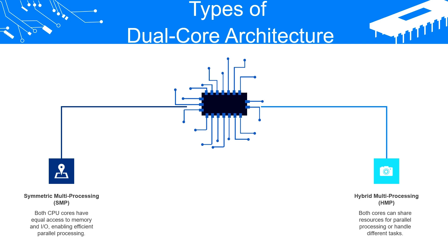Starting with Symmetric Multiprocessing (SMP): SMP is a type of dual core architecture where both cores are identical and have equal access to the system's resources. Both cores are capable of executing any task and the operating system treats them as equal processing units. SMP is the most common type and is used in many desktop, laptop, and server computers to provide higher processing power and better multitasking capabilities.